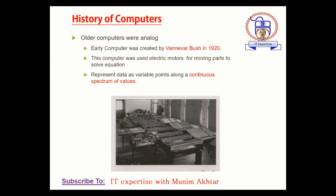Now let's discuss the history of computers. Older computers were analog. Analog means they use continuous signals — just like if you have seen ECG results, you have a heartbeat in the form of continuous signals shown on paper. The early computer was created by Wiener Bosch in 1920. These were the first computers, and they used analog signals. This computer used electronic motors, which produce continuous signals — not discrete values. That's why they are called analog computers.